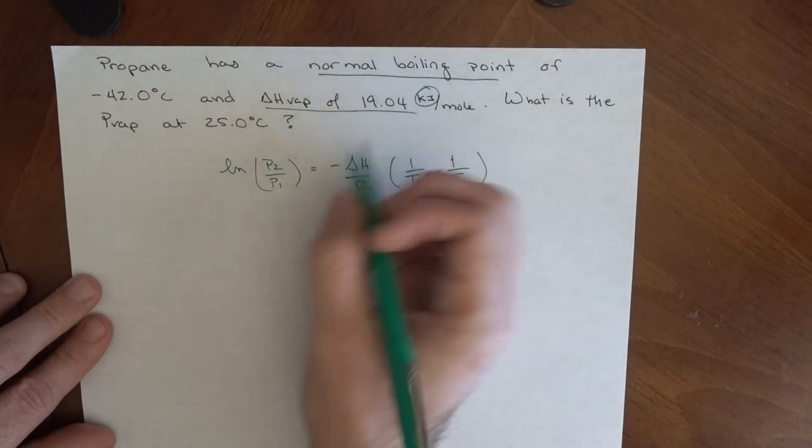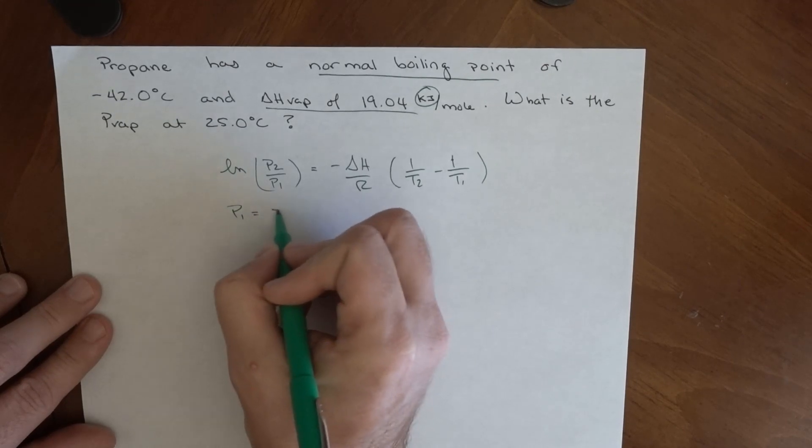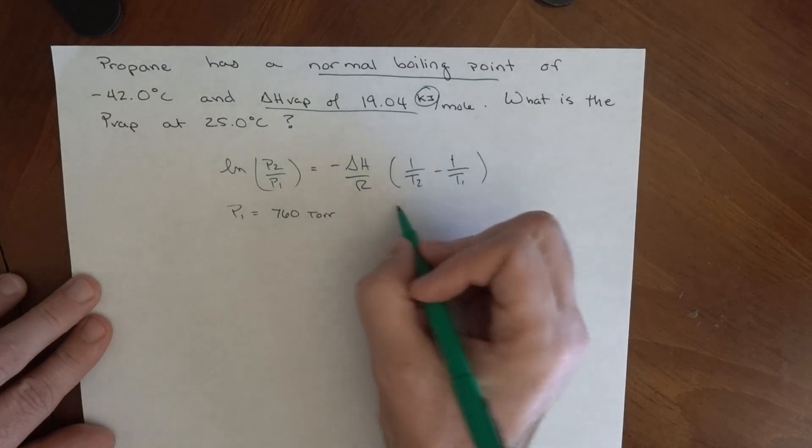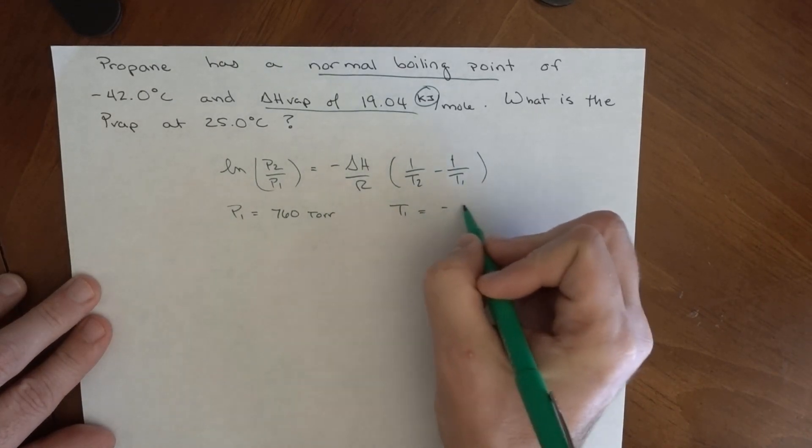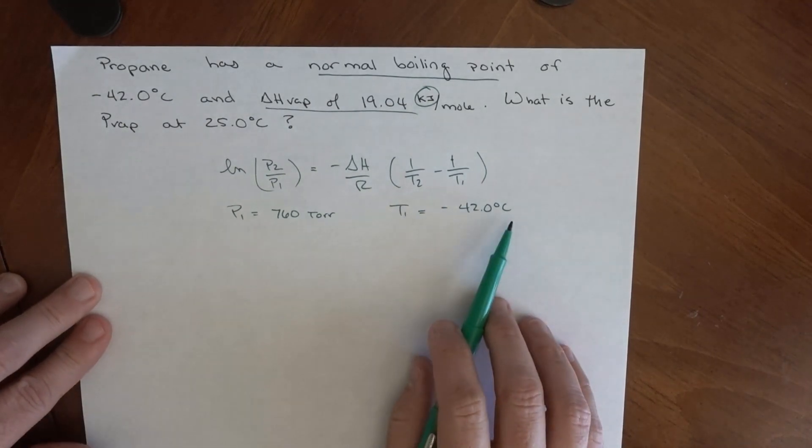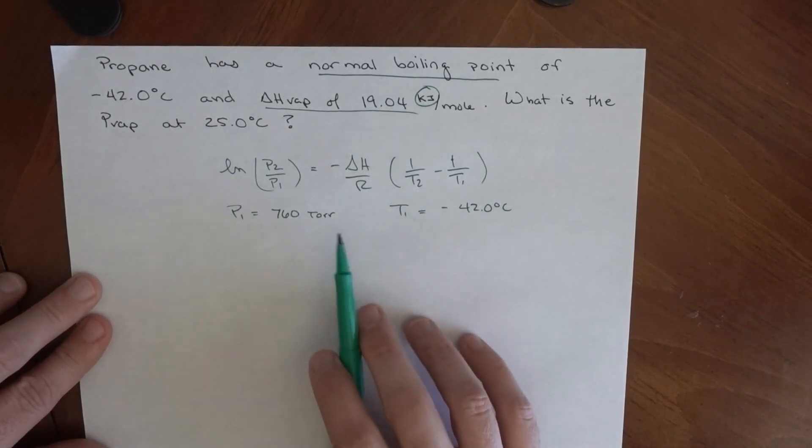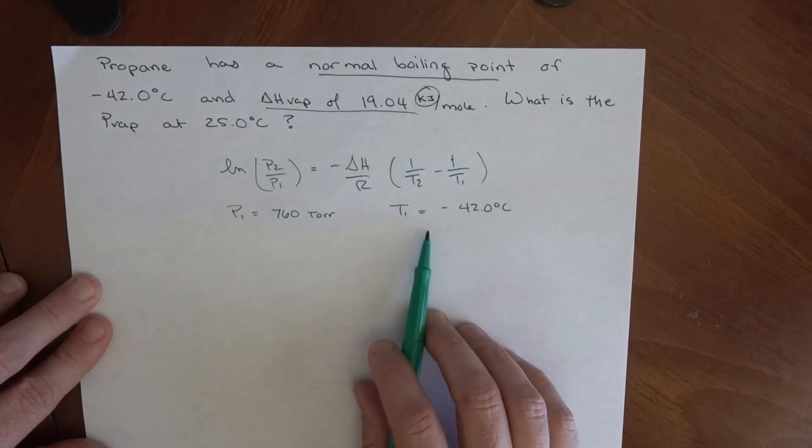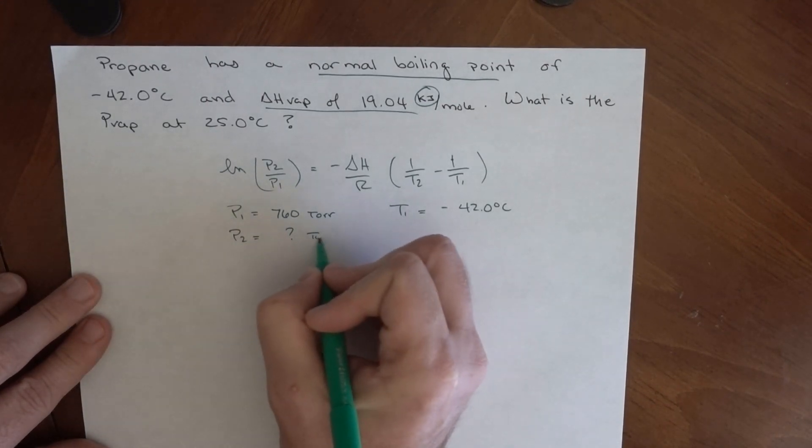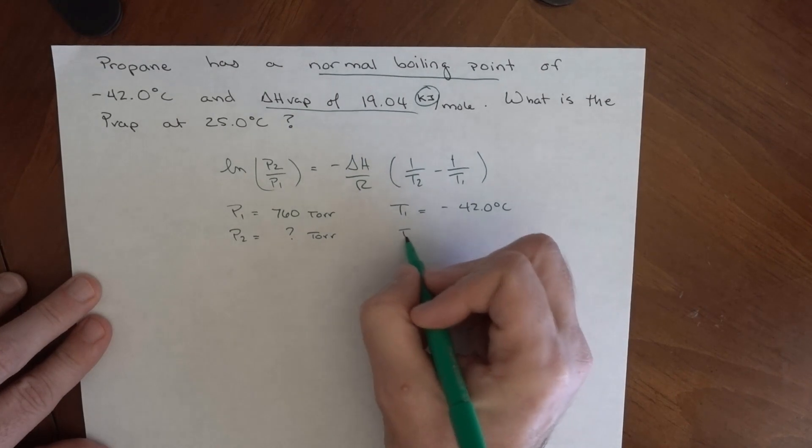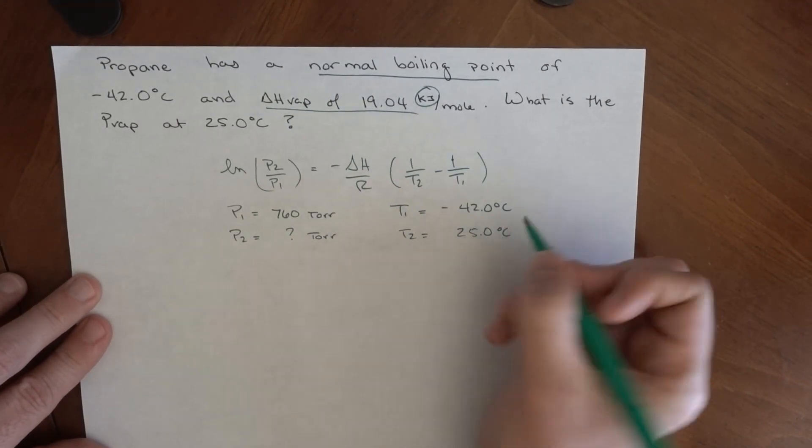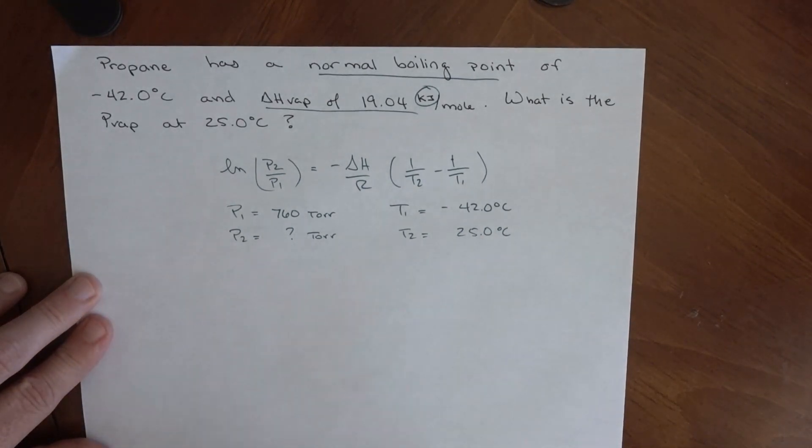The normal boiling point, P1, is 760 torr at regular atmospheric pressure, and T1 is -42.0°C. That means at -42°C, the vapor pressure of this liquid equals ambient pressure, so this represents boiling temperature. P2 we don't know—that's some number in torr. The temperature T2 is 25°C. So at 25°C, we want to know what the pressure is.